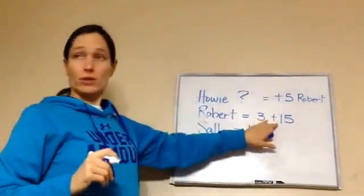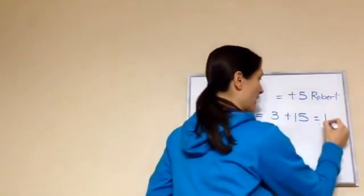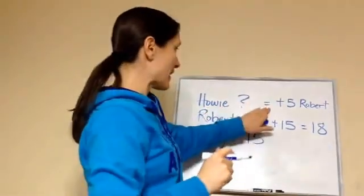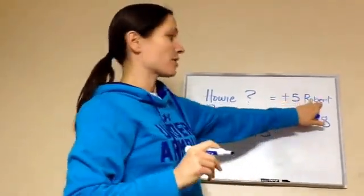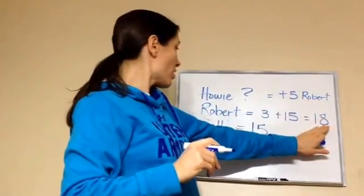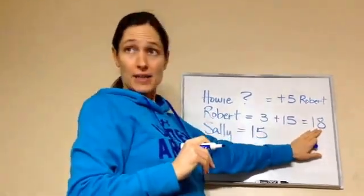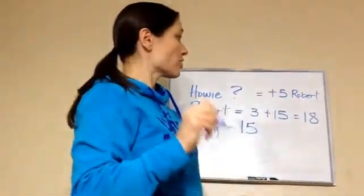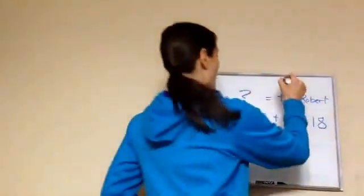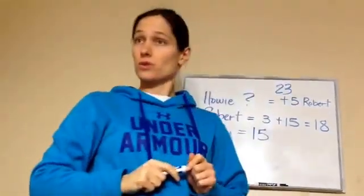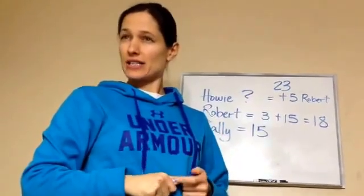So how old is Robert? 18. Now, Howie is five years older than Robert. So if Robert's 18, that's 19, 20, 21, 22, 23. Howie is 23 years old. You got it? You see how I did that?